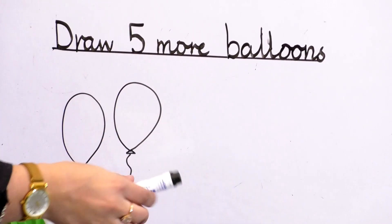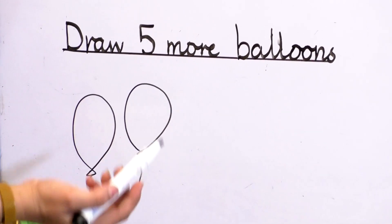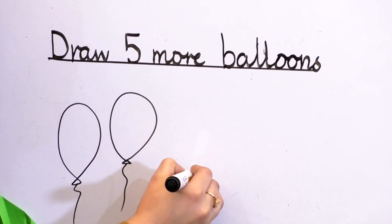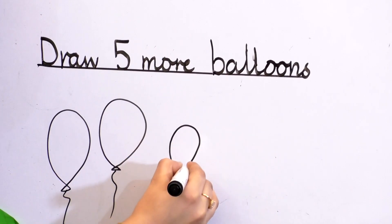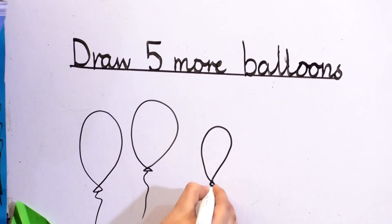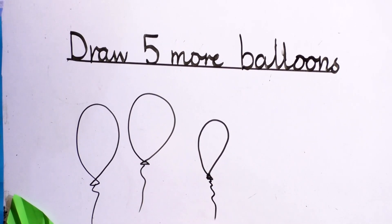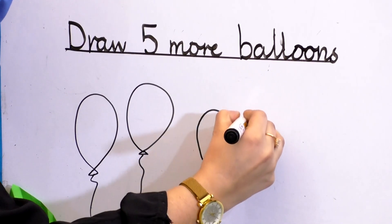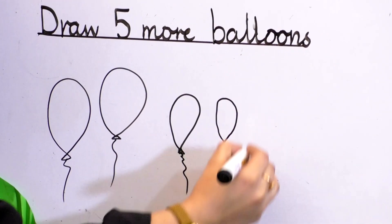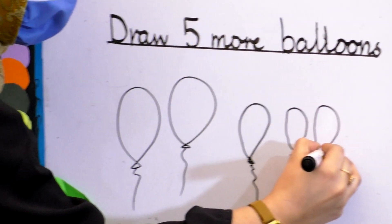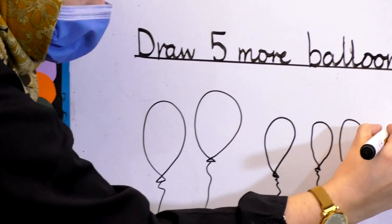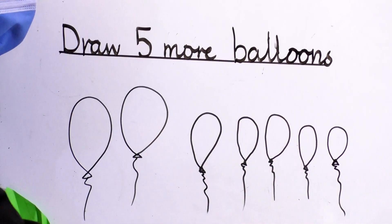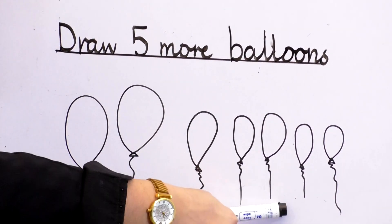Draw five more balloons here. We have just two balloons, so we make five more balloons here. Let's draw. Like this. It's small triangle and then zig-zag line. Then again. Two balloons, three balloons, four balloons, five balloons here. We draw five more balloons here.